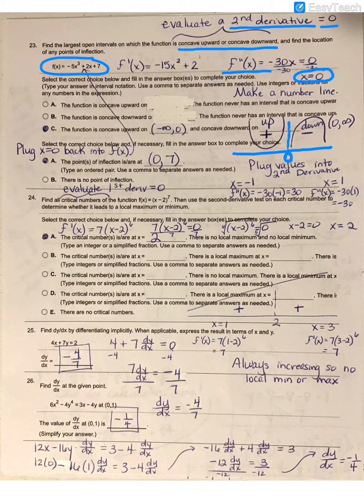Choose anything smaller than 0 to plug in. I just happened to use negative 1, and it's very important you're plugging it back into your second derivative. When I plug negative 1 in, I get a positive 30.